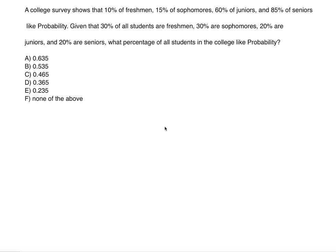Hello everyone. In this video we're going to talk about another probability problem. A college survey shows that 10% of freshmen, 15% of sophomores, 60% of juniors, and 85% of seniors like probability. Given that 30% of all students are freshmen, 30% are sophomores, 20% are juniors, and 20% are seniors, what percentage of all students in the college like probability? We're going to take it case by case.